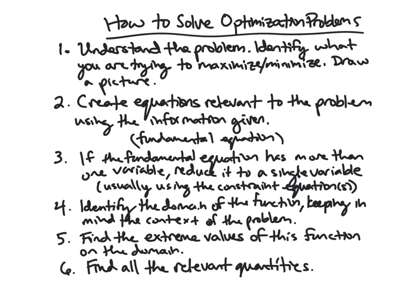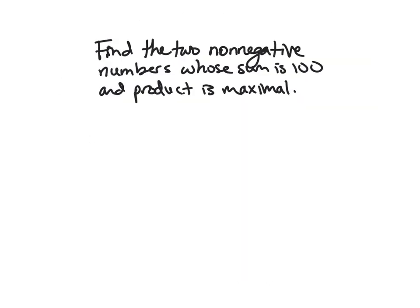And then finally, we close up by finding all of the relevant quantities that we are asked for. So by putting our function in one variable, we may have to go back and substitute and solve for the other variables. We may have cared about those. So this is a step where we kind of close things up. So let's do an example.